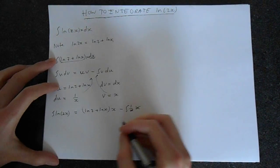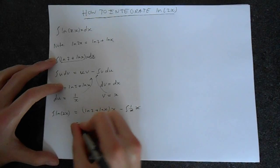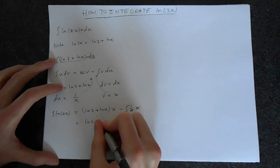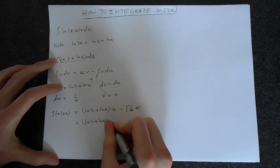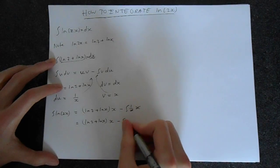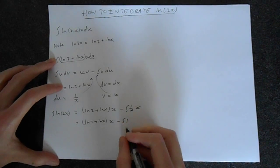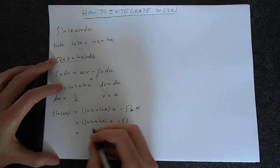Unsurprisingly, these things cancel. So we are left with ln2 plus lnx times x minus the integral of 1. The integral of 1 is, of course, just x.